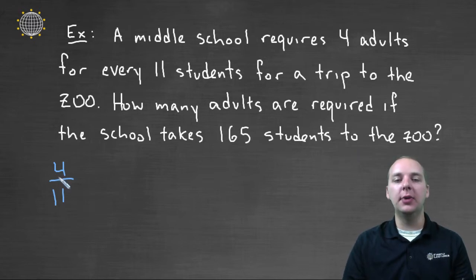So we need to increase this ratio to where the denominator is actually a hundred and sixty-five. So we can write this as a proportion. Four to eleven, four adults to eleven students, would be equivalent to x adults to one hundred and sixty-five students.